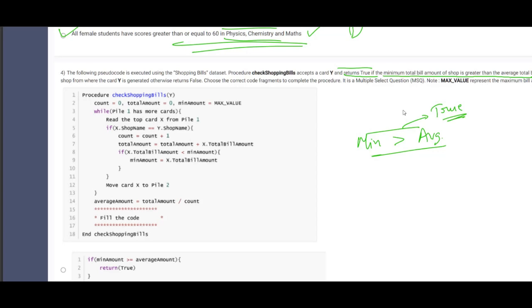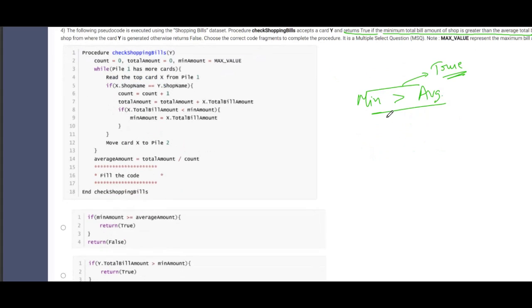So let us find out the most suitable answer here. Procedure count is 0, total amount is 0, minimum amount is maximum value. If X dot shop name, count is not required for us because it's only checking for the total number of bills that have been acquired from a shop. Total amount equals total amount plus X dot total bill amount. This is being calculated in order to find out the average bill. Everything is solved till step number 14 and the key point which has to be calculated is missing in line number 15 to 17.